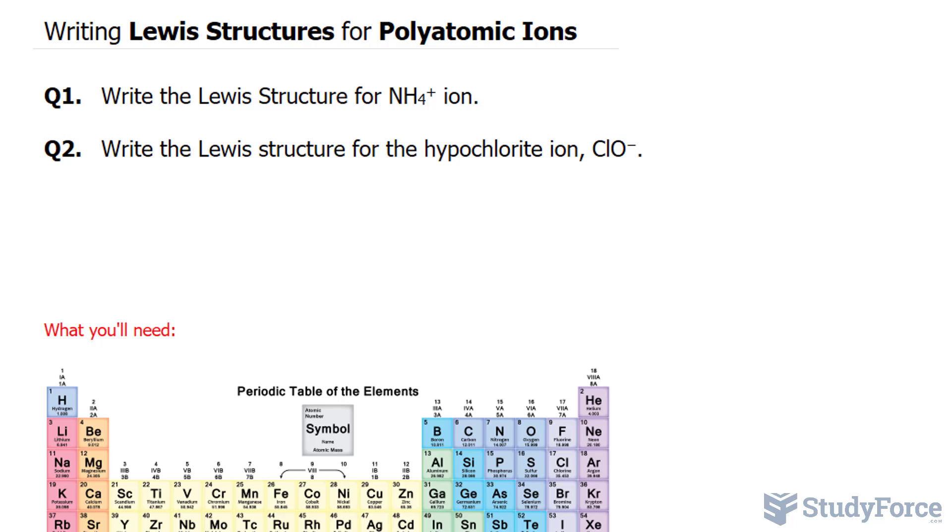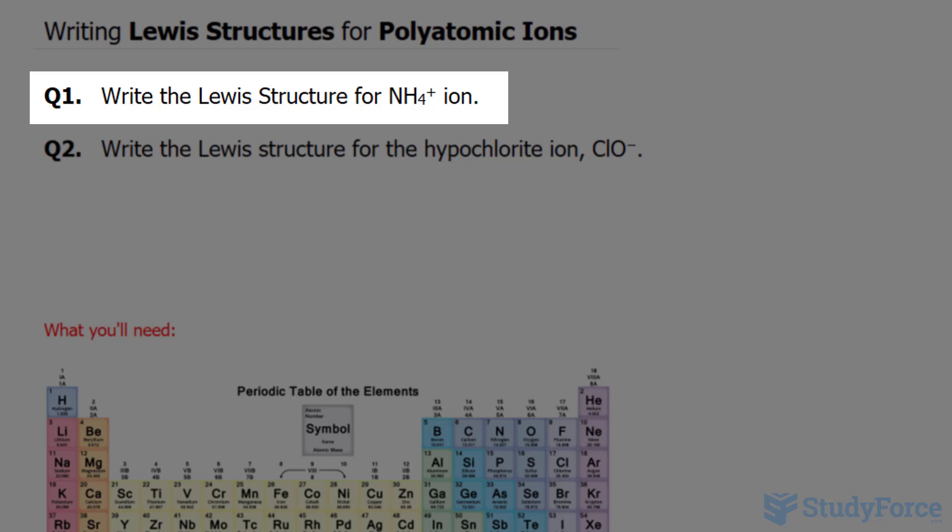In this lesson, I'll show you how to write Lewis structures for polyatomic ions. In question number one, we're asked to write the Lewis structure for ammonium ion, represented as NH4+.